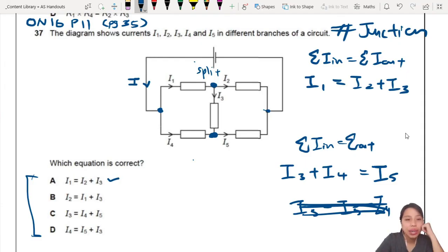So the others are not quite right. I3 plus I4 equals I5. These are all wrong. So this is your answer. Just that, just pick a junction, check what current is going in, what current is going out, and then you can actually form an equation.